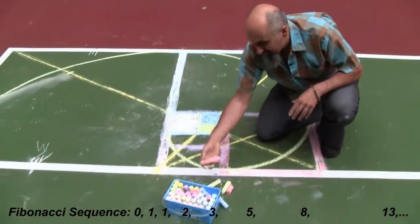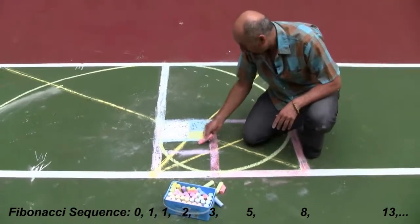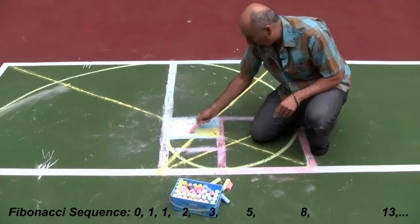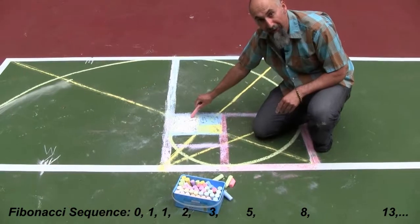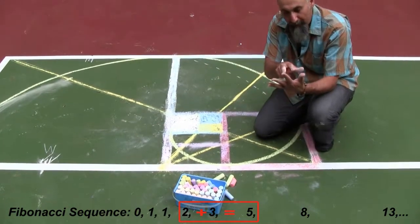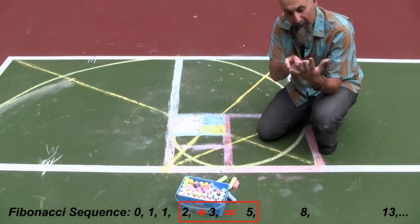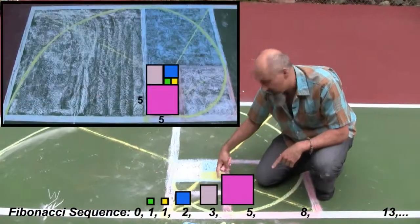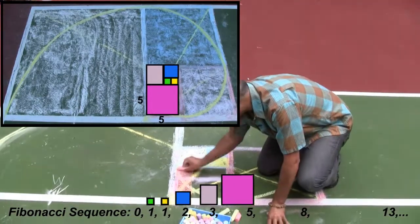So let's use pink for this one, because what this is now is one plus one plus three, because this was a three by three square. So that makes it five, right? So zero, one, one, two, three - three plus two is five. The next number in the Fibonacci sequence is five. So this is a five by five square.